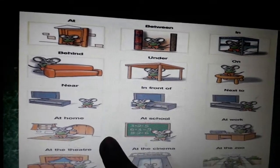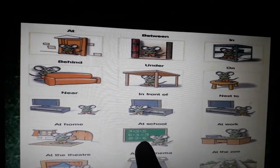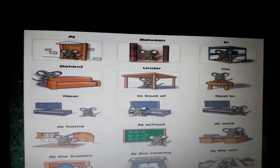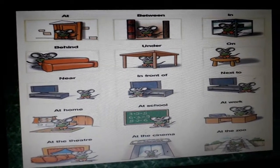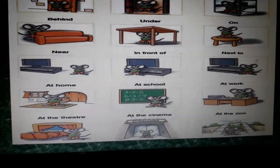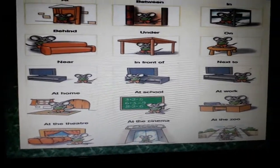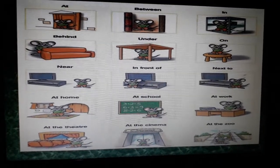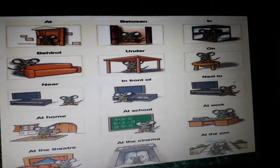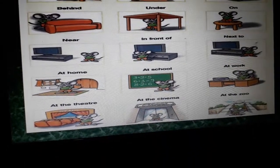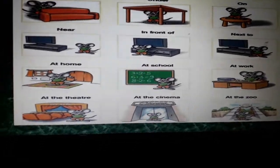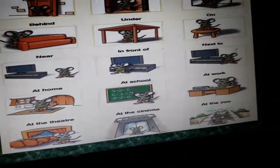Now see — 'at home,' 'at school,' 'at work': when we are doing something somewhere, we say 'at home,' 'at work,' 'at school,' 'at the theatre,' 'at the cinema,' 'at the zoo.' Here, you are not just touching the surface — you are doing activities over there, so we use 'at home,' 'at school.'